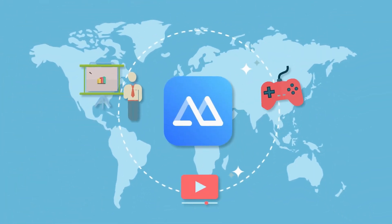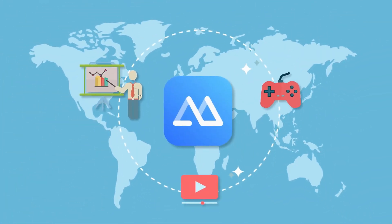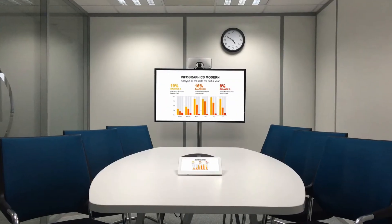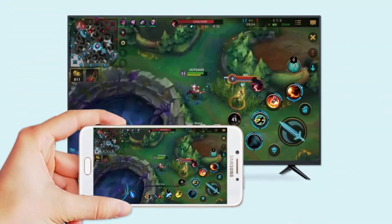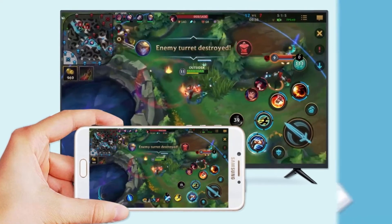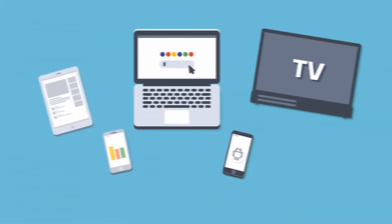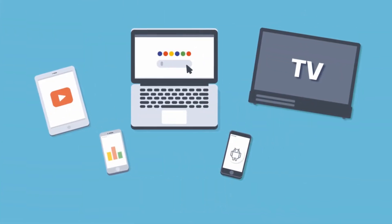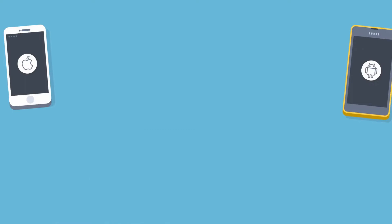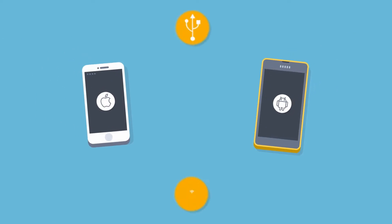A Power Mirror is a versatile app you can use anywhere, either for presenting presentations at work, mirroring mobile games to TV, or for your business and education needs. It is available on Android and iOS, via USB and Wi-Fi.